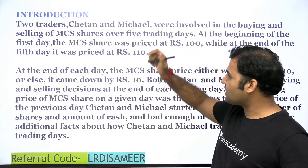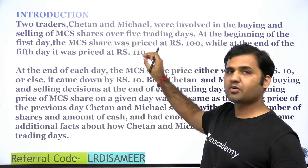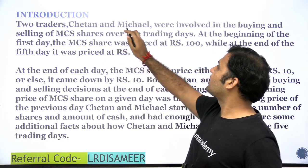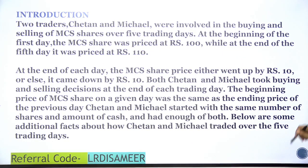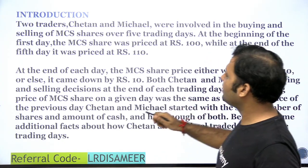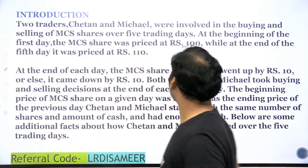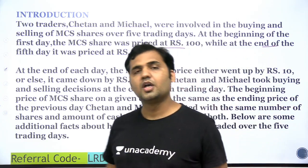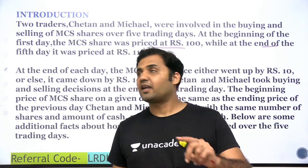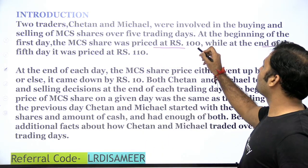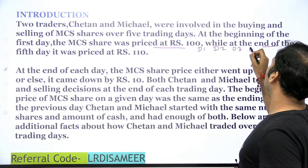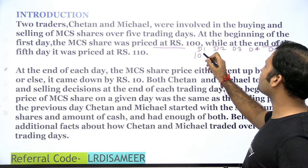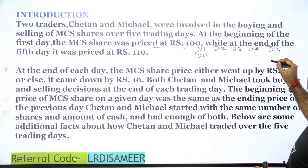Let's start with the introduction. Let's first understand some important points — those points will help you in solving the set without making any case. Two traders, Chetan and Michael, were involved in the buying and selling of MCS shares over five trading days. At the beginning of the first day, the MCS share was priced at Rs.100, while at the end of the fifth day, it was priced at Rs.110. So two key points: five-day trading — Day 1, Day 2, Day 3, Day 4, and Day 5 — with the MCS share opening at Rs.100 and closing at Rs.110 on Day 5.